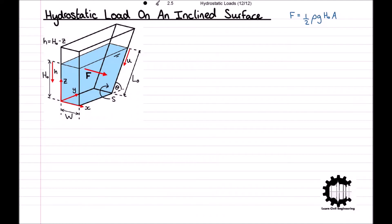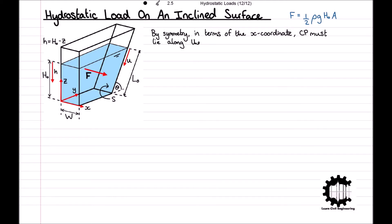In the previous two videos, where we calculated the hydrostatic load on a horizontal base and a vertical end wall, we worked through the calculations for finding the centre of pressure in terms of the horizontal x-coordinate, even though you could determine it using intuition. In this case, for our inclined surface, we can use our intuition again, and by symmetry, we can tell that in terms of the x-coordinate, the centre of pressure Cp must lie along the vertical centreline of s. If you would like to see the manual calculations for determining this, the links for the previous two videos will be in the description below.